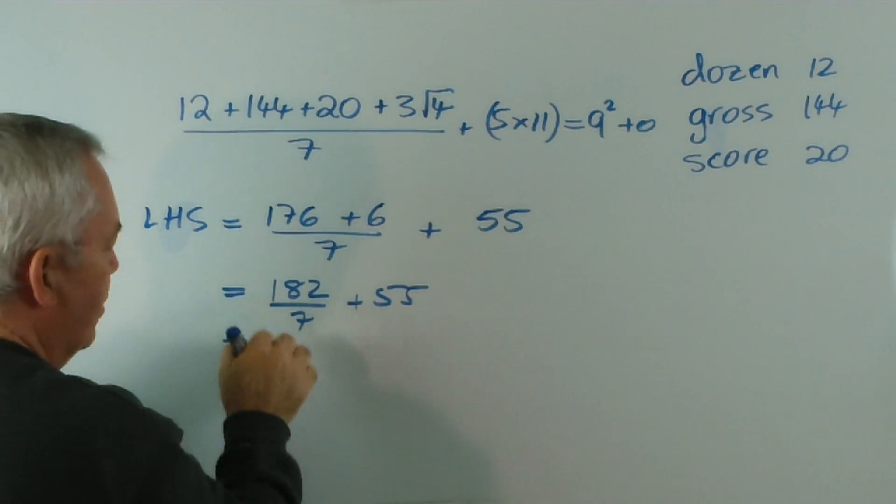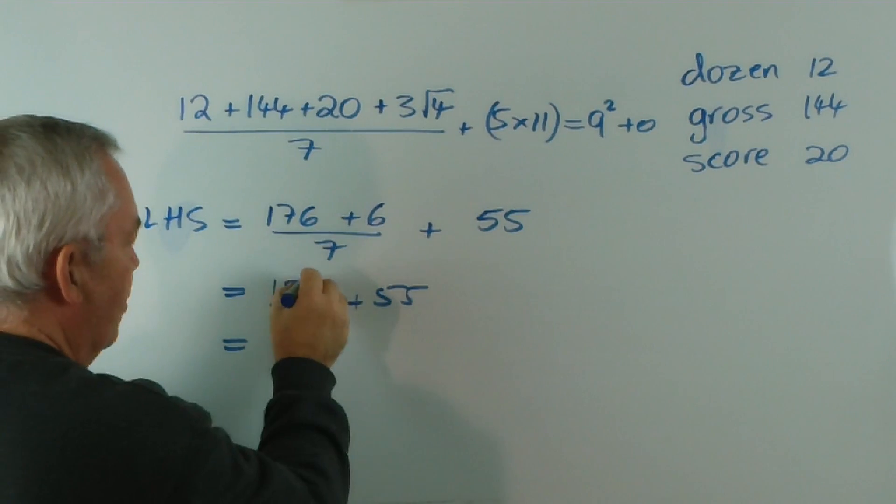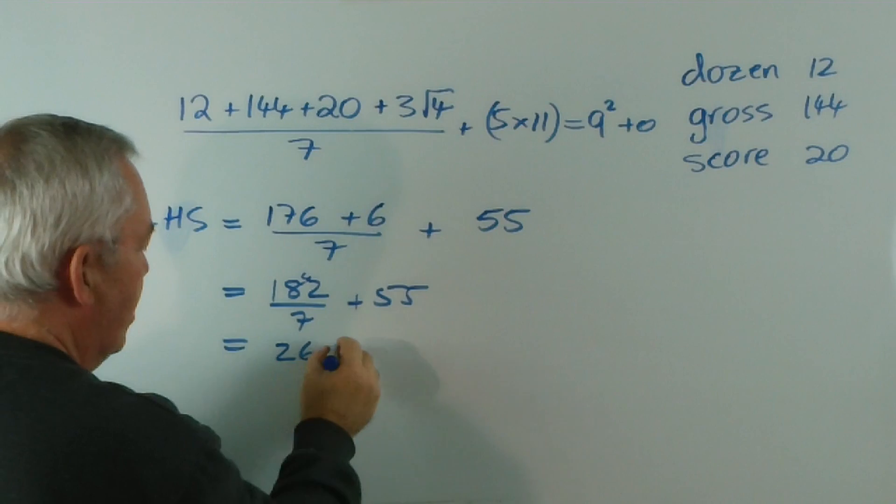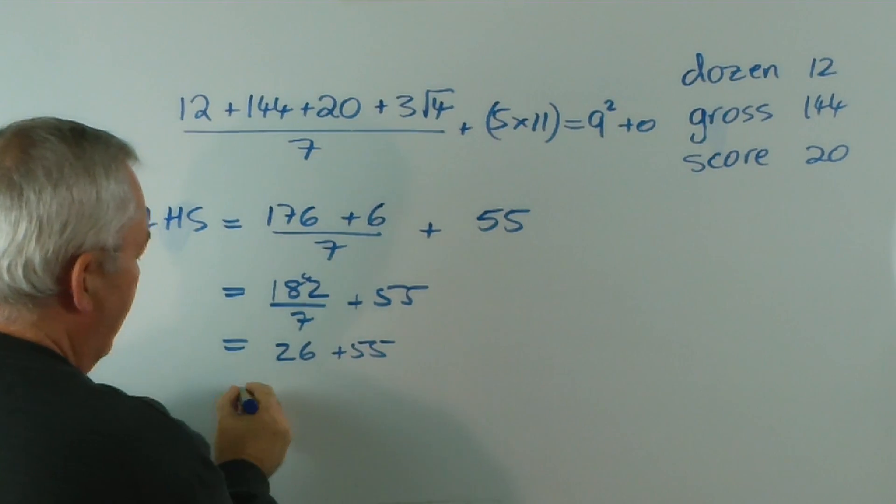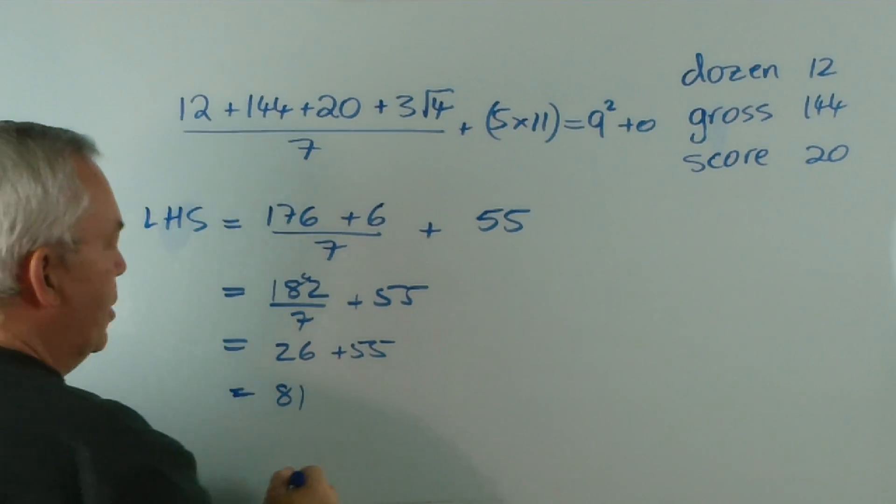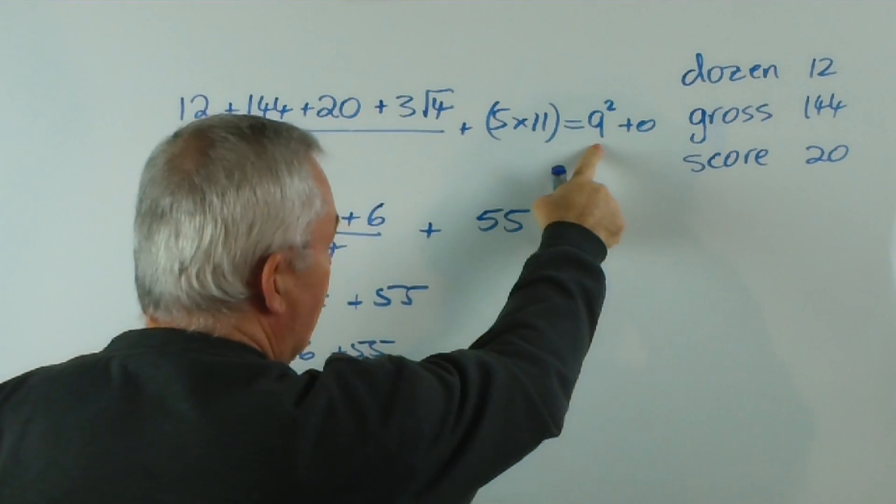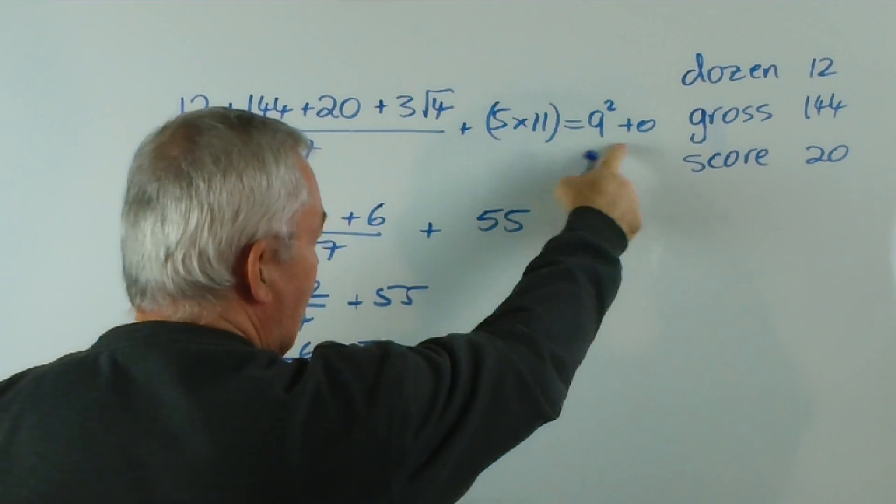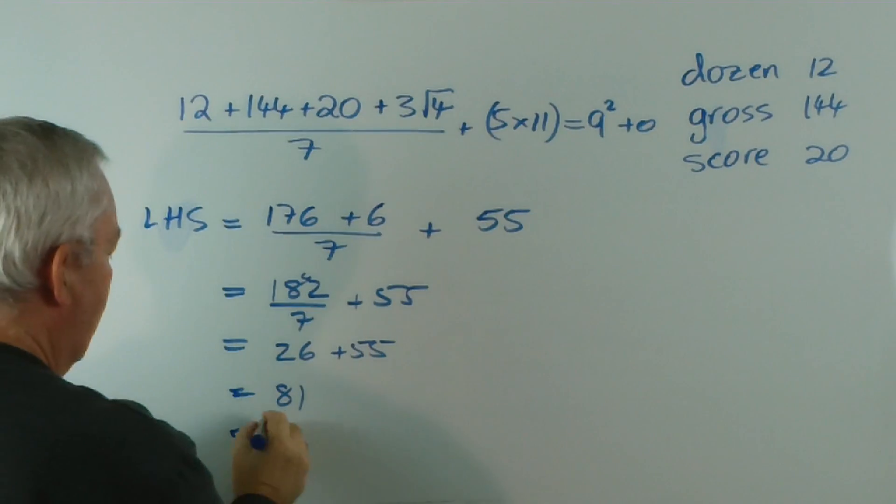Sevens into 182... sevens into 18 goes twice, with four over, and sevens into 42 goes six. And 26 and 55 is 70, 81, which I think you can see is equal to nine squared... 81 plus nothing. So that equals the right-hand side.